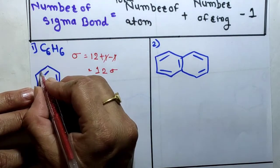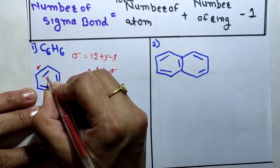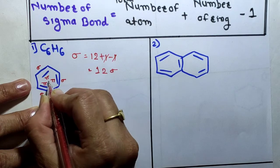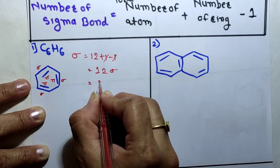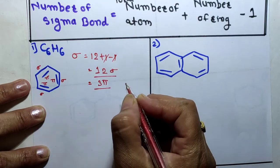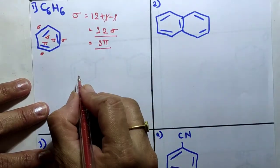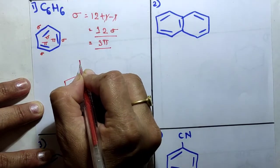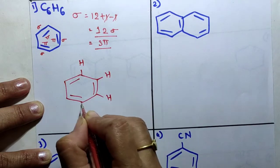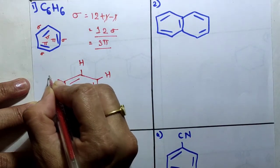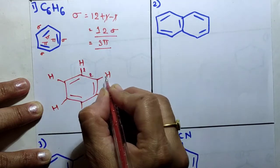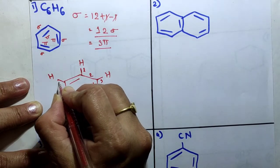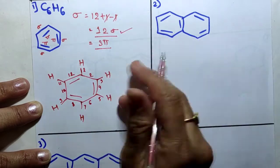To calculate the pi bonds, in a double bond one bond is sigma and one is pi. Benzene has 3 double bonds, so there are 3 pi bonds. Therefore benzene has 12 sigma bonds and 3 pi bonds. Drawing the structure and counting confirms: 1, 2, 3, 4, 5, 6, 7, 8, 9, 10, 11, and 12 — that is 12 sigma bonds.